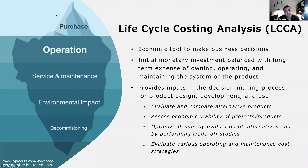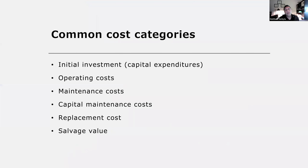LCCA is based on the iceberg analogy, where the purchase price is really just the tip of the iceberg. We also have operation costs, service and maintenance, environmental impact costs, and costs associated with decommissioning. The common cost categories used in LCCA include the initial investment (capital expenditure), operating costs, maintenance costs, capital maintenance for large maintenance tasks, replacement cost, and the salvage value at end of life.